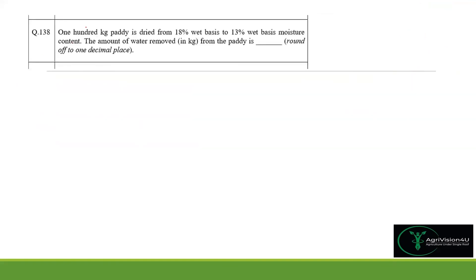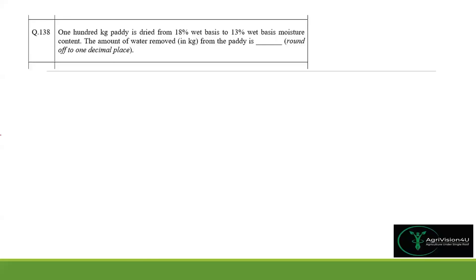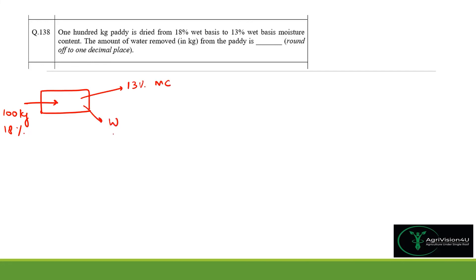Moving to question 138, a numerical type question: 100 kg of paddy is dried from 18% moisture content (wet basis) to 13% moisture content (wet basis). We need to find the amount of water removed. This is a mass balance question. 100 kg of paddy at 18% moisture enters the dryer and leaves at 13% moisture.